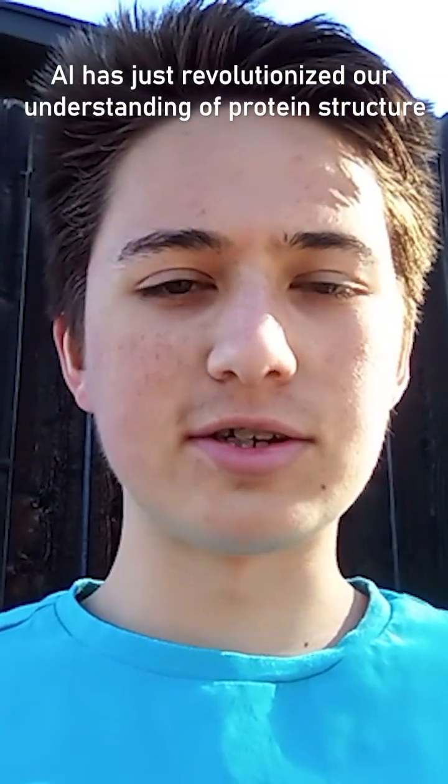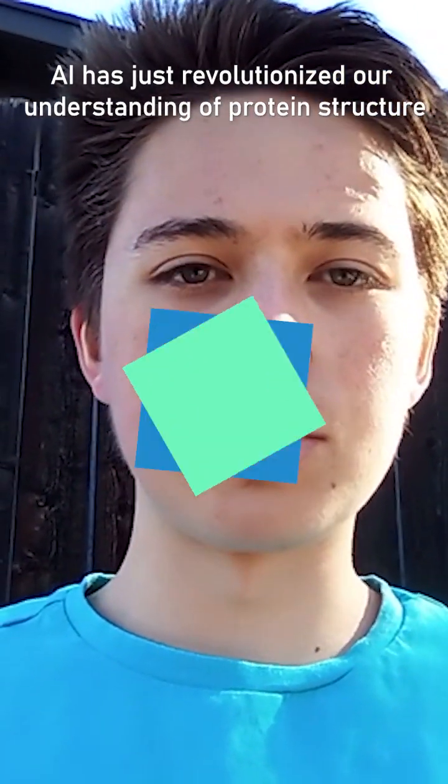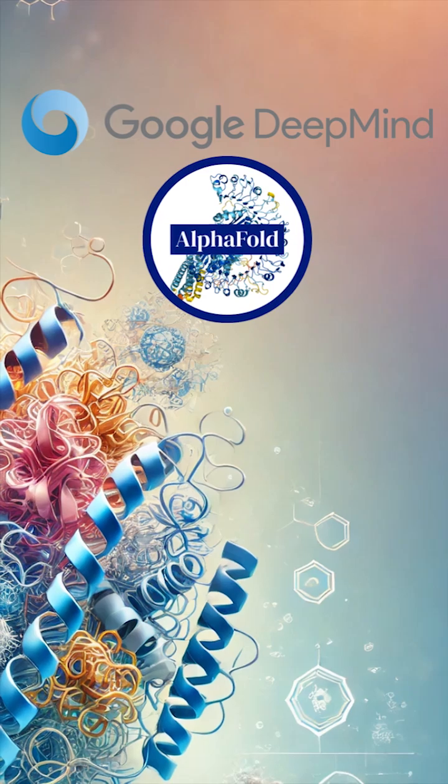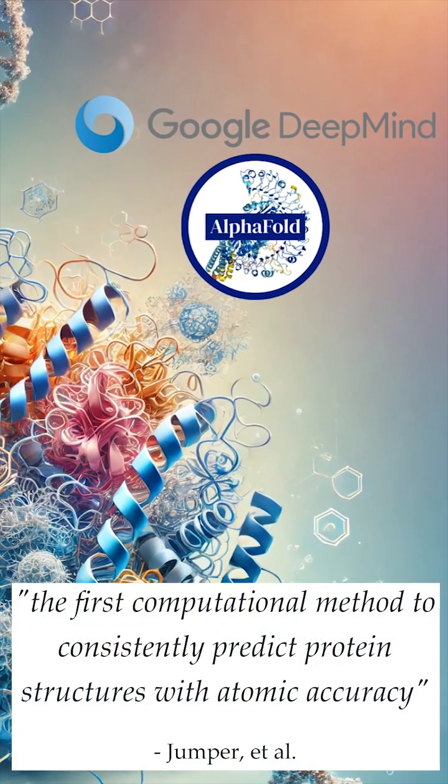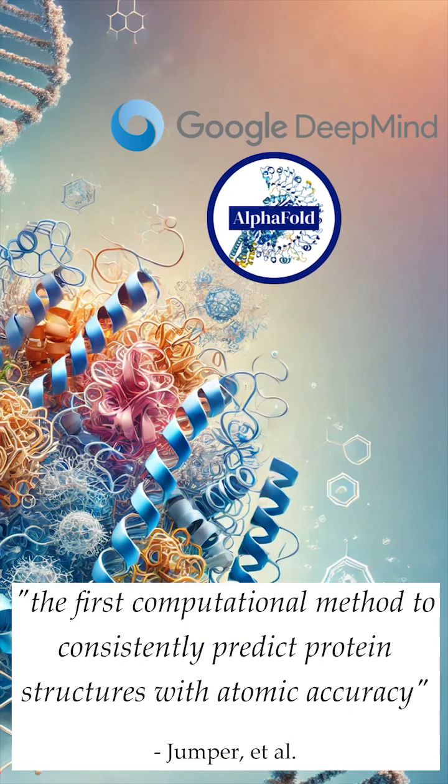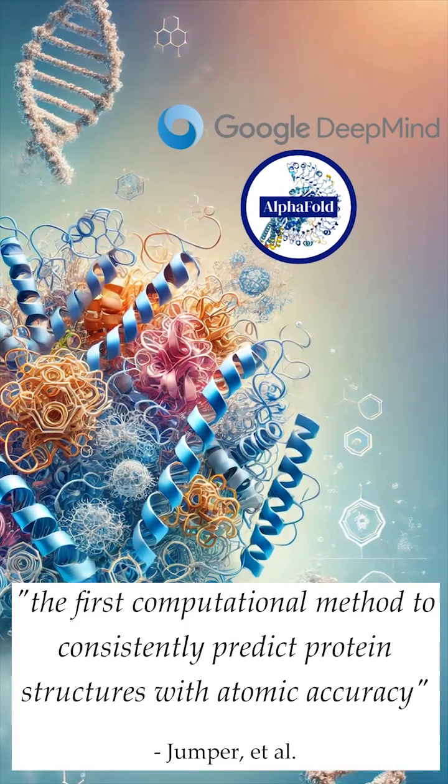AI has just revolutionized our understanding of protein structure. Google DeepMind's AlphaFold has been hailed as the first computational method to consistently predict protein structure with atomic accuracy.